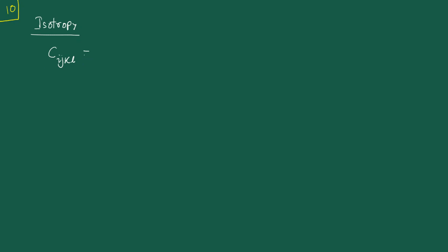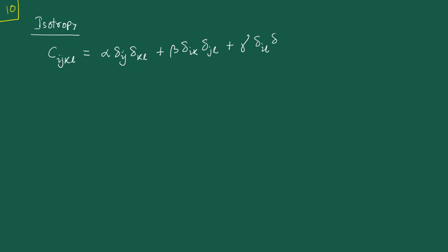So C_ijkl, if it is a fourth order isotropic tensor, then it can be expressed as: alpha * delta_ij * delta_kl + beta * delta_ik * delta_jl + gamma * delta_il * delta_jk, where alpha, beta, and gamma are constants.